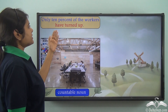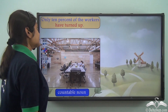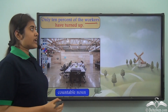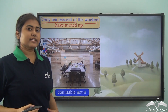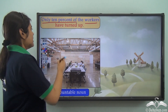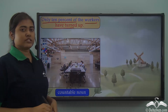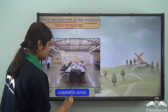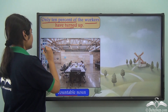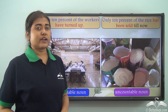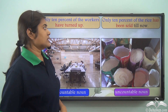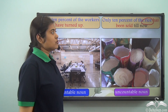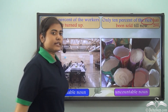'Only ten percent of the workers have turned up.' Here 'workers' is a countable noun, so we use the plural verb 'have turned up.' But 'Only ten percent of the rice has been sold till now' — rice is an uncountable noun, so we use the singular verb 'has been sold.' Once again, a quantity phrase like 'ten percent of' requires you to identify the noun following it to determine the verb.